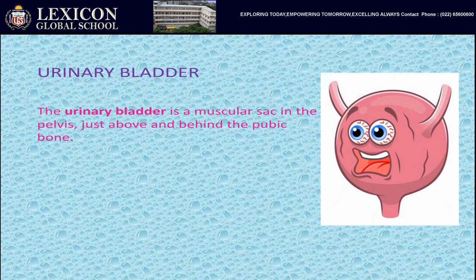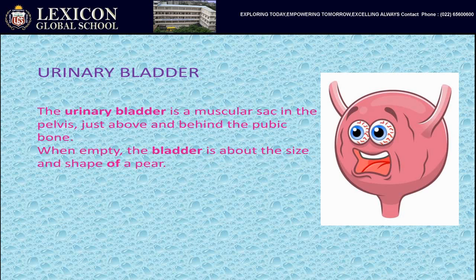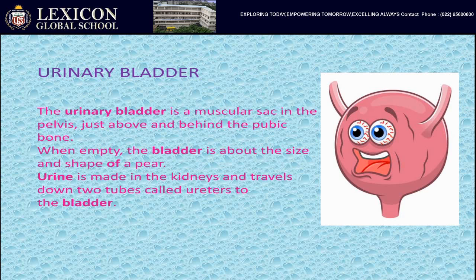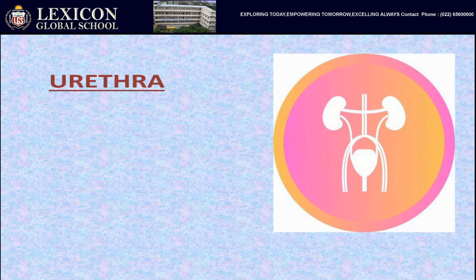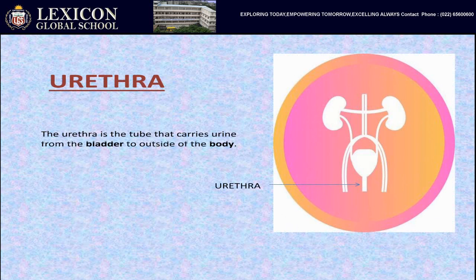The urinary bladder is a muscular sac in the pelvis, just above and behind the pubic bone. When empty, the bladder is about the size and shape of a pear. Urine is made in the kidneys and travels down two tubes called ureters to the bladder. The bladder stores urine, allowing urination to be infrequent and controlled. The urethra is a tube that carries urine from the bladder to the outside of the body.